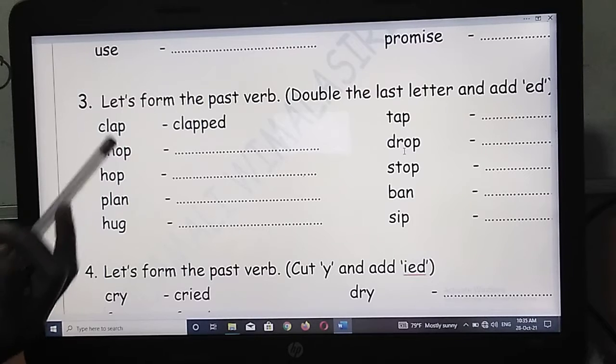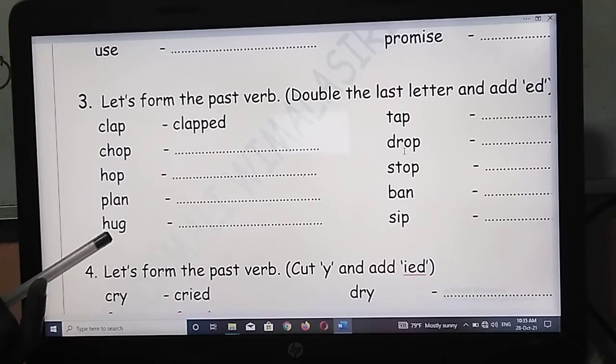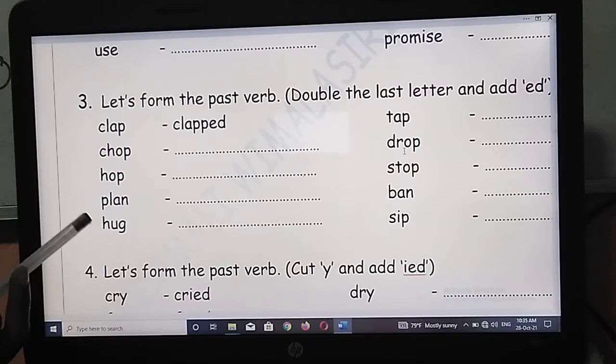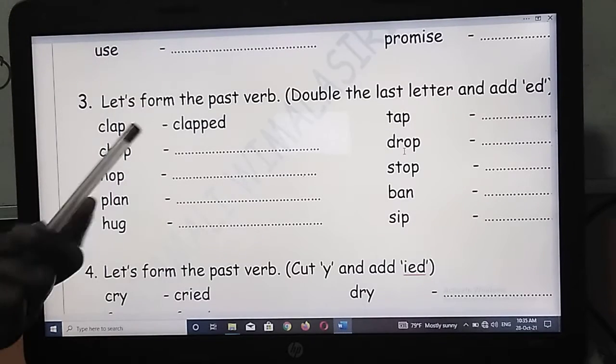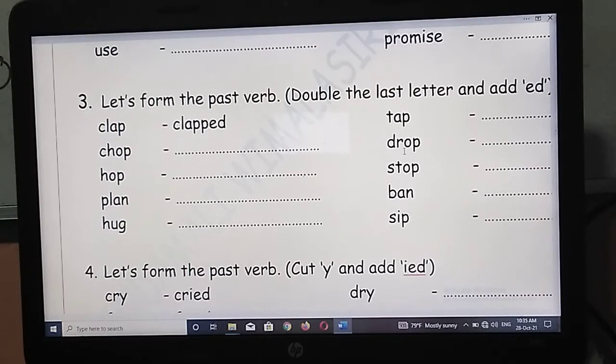Before P, you can see A. Before G, you can see A. Like that. Before the last letter, there is a vowel. To such word, we double the last letter and add ED to form the past verb.